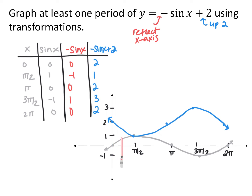Taking everything and reflecting it across the x-axis — because we always do multiplication first — and then shifting everything up 2, our new function looks like this. Something to keep in mind: sine always starts at its middle or equilibrium at 0. A positive sine graph always starts by increasing, so it goes middle, high, middle, low, middle. Since it's been reflected, it's going to go middle, low, middle, high, middle — following that same pattern throughout.